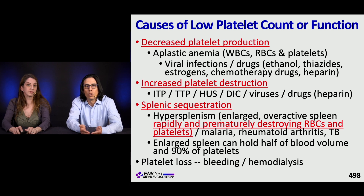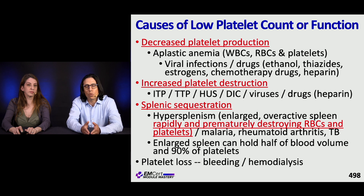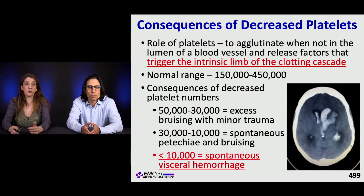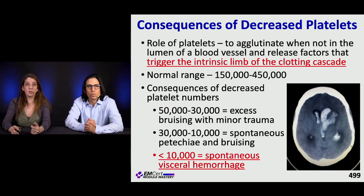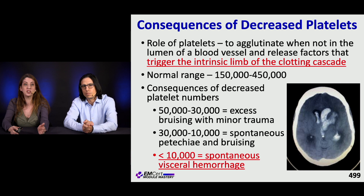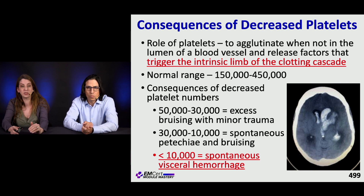Medical conditions causing hypersplenism include malaria, rheumatoid arthritis, and TB. With splenomegaly you can hold half your blood volume and 90% of your platelets in the spleen. Platelet loss can also occur from bleeding, hemodialysis, or continuous renal replacement therapy. The normal platelet range is 150,000 to 450,000. Platelets function to agglutinate outside blood vessels and release factors that trigger the intrinsic clotting cascade.